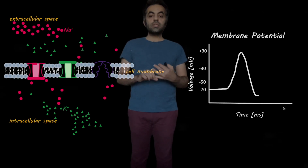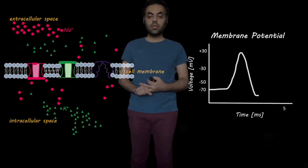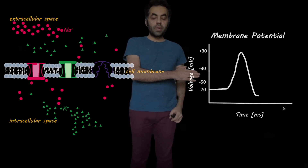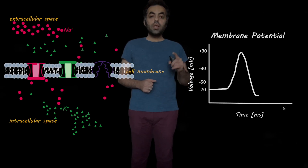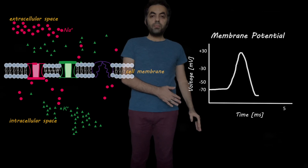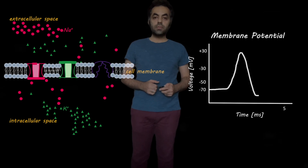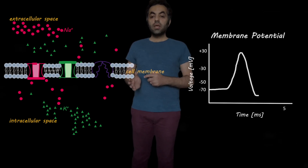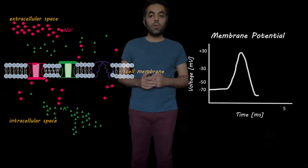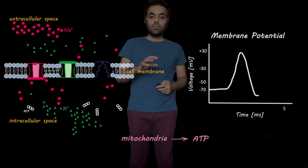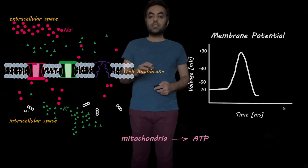Because of that, both sodium channels and potassium channels close. Now, if you look at the membrane potential graph, the membrane potential went even below the resting potential, which was minus 70 millivolts. Here, the sodium-potassium pumps help the cell membrane get back to its resting potential.